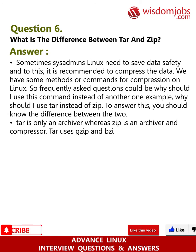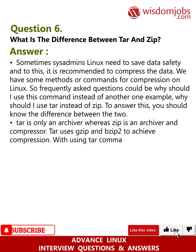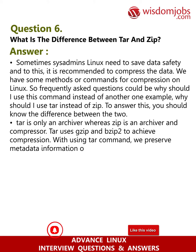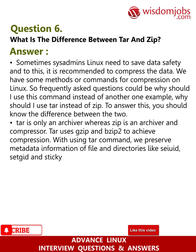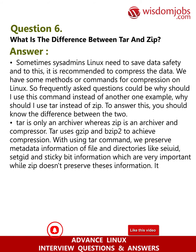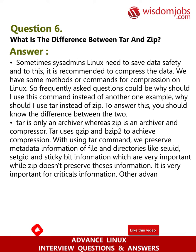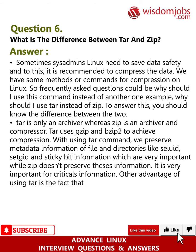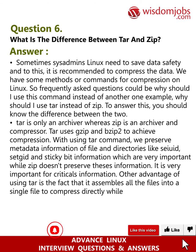TAR uses gzip and bzip2 to achieve compression. With the TAR command, we preserve metadata information of files and directories like SUID, SGID, and sticky bit information, which are very important, while ZIP doesn't preserve this information. This is very important for critical data. Another advantage of TAR is that it assembles all the files into a single file to compress directly, while ZIP compresses file by file.